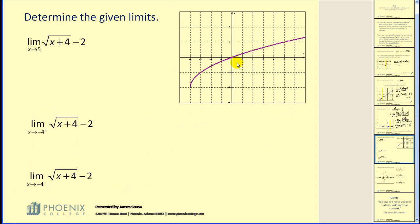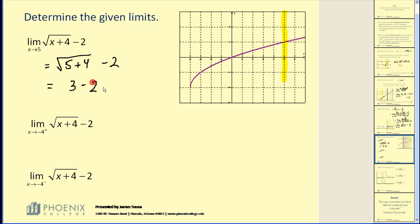Now we have a square root function. This first limit is as x approaches positive 5. We can see the function is nice and continuous in this area. The point it's approaching is on the function, so we can find this limit by performing direct substitution. This limit will be equal to the square root of 5 plus 4 minus 2. The square root of 9 would be 3, and 3 minus 2 is equal to 1. This limit is equal to 1, which we can verify graphically.